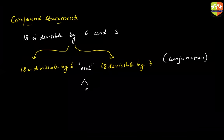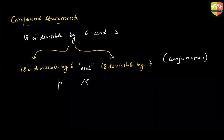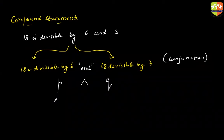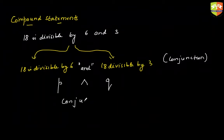Such a statement is called a conjunction. When you say P and Q, it is mathematically represented as P up-arrow Q. The statement is called a conjunction, and these two component statements are called conjuncts.